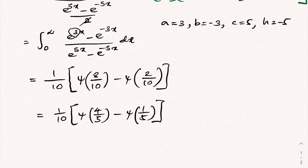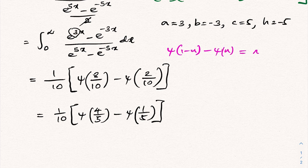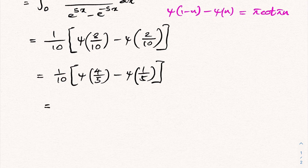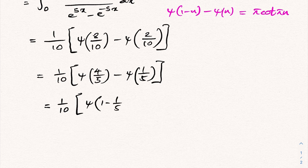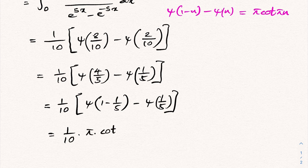Now we use another interesting identity about the digamma function, which we also covered in a previous video — link in the description. We know digamma(1 minus n) minus digamma(n) equals pi times cotangent of pi*n. Therefore, digamma(4/5) = digamma(1 minus 1/5), and so digamma(4/5) minus digamma(1/5) equals pi times cotangent of pi*(1/5). This gives 1/10 times pi times cotangent(pi/5).